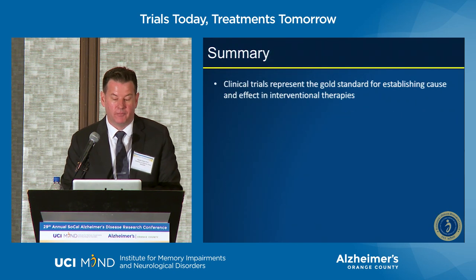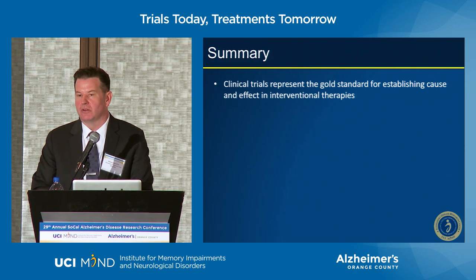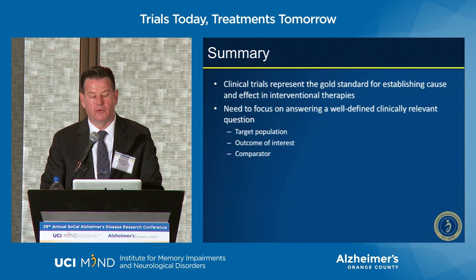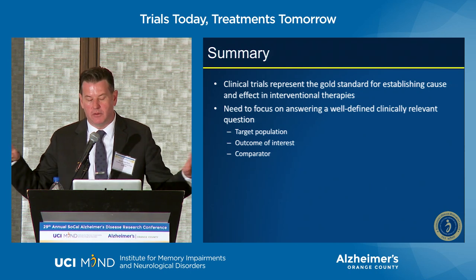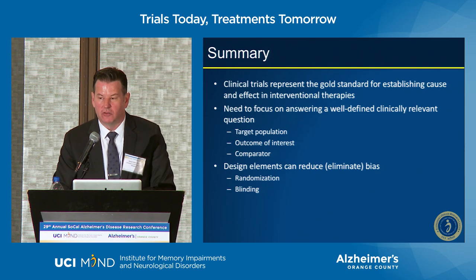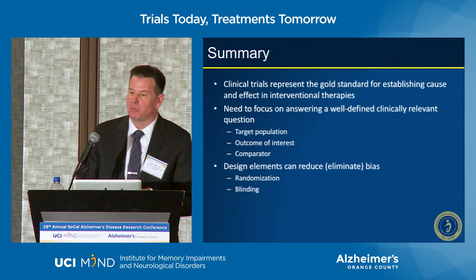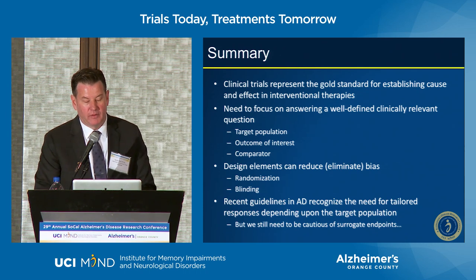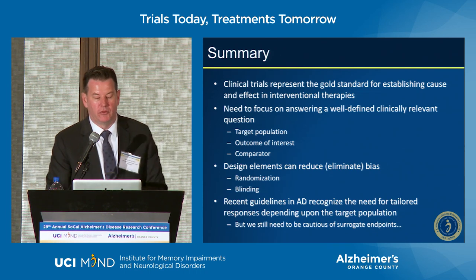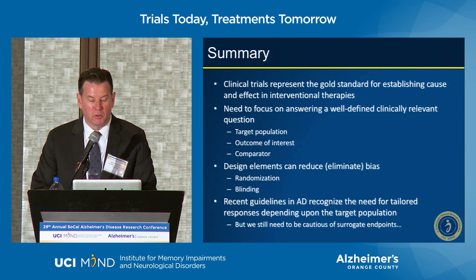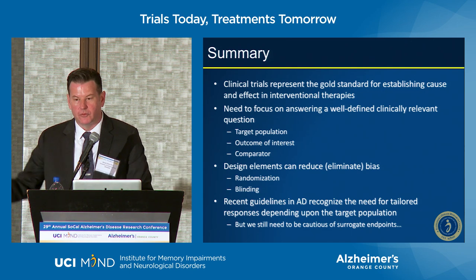In summary: clinical trials are our gold standard for inferring cause and effect and truly making decisions about disease and new therapies. We need to focus on the target population, the outcome of interest, and the comparator. Our design elements — randomization and blinding — are a sacrifice on the participant's part; they must be willing to undergo that process. Our recent guidelines are moving us in the right direction, tailoring responses and target populations. We do need to be cautious about long-term follow-up and surrogate endpoints, but I think we're moving well in the right direction. Thank you.